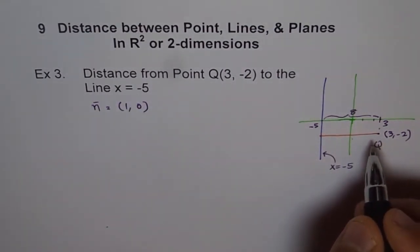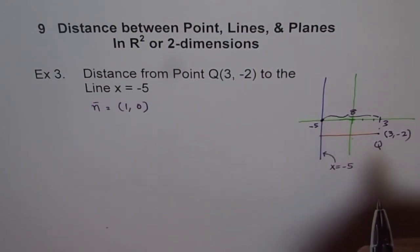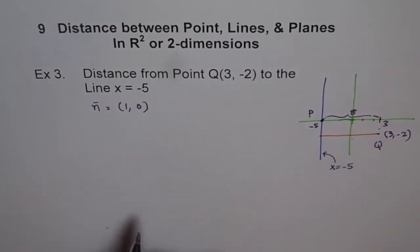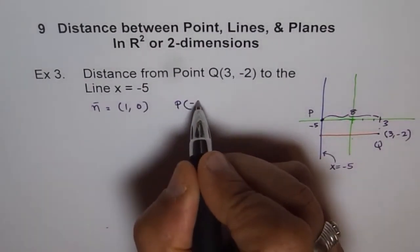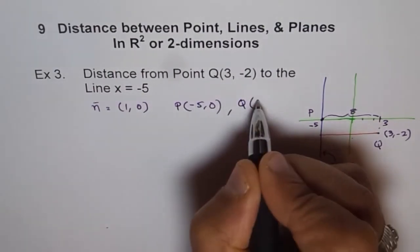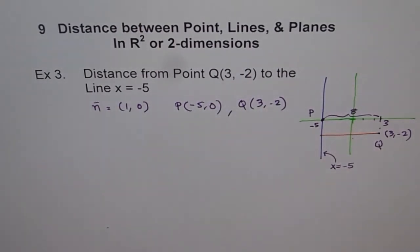And let us say we are given some point on the line. And let's assume this point is given to us. So we'll call this point as P. So the P point for us is minus 5 and 0. And Q is given to us as always 3 and minus 2.